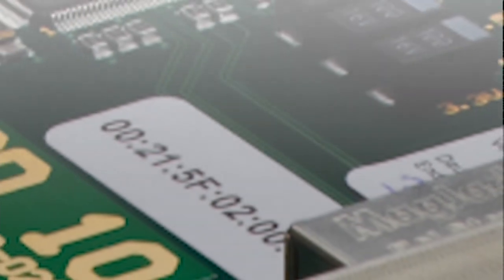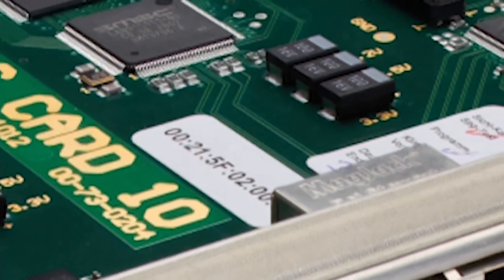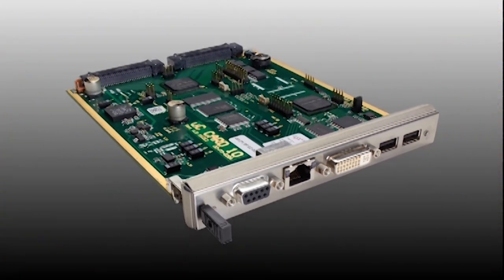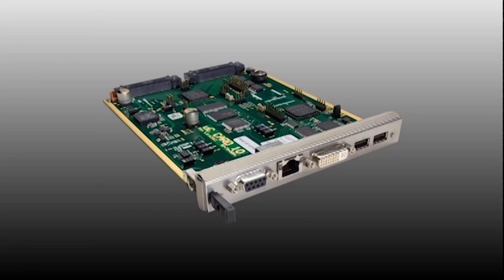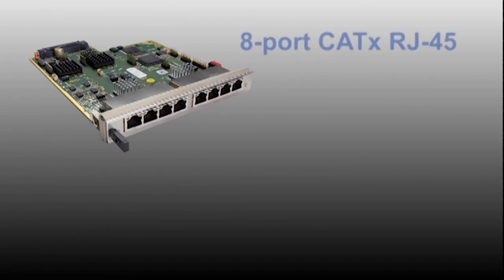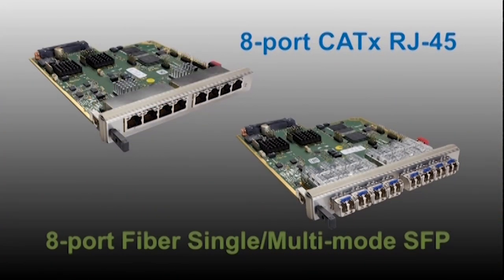The next card we're going to cover is the control card. The control card is a one-of-a-kind in each chassis. It will allow you as the admin to configure and manage your switch locally at the chassis location. The next cards we're going to cover are the I/O cards. Each card option can either be a CAT-X model with eight RJ45s, or you could have eight fiber SFPs, which will support both multi-mode and single-mode fiber.